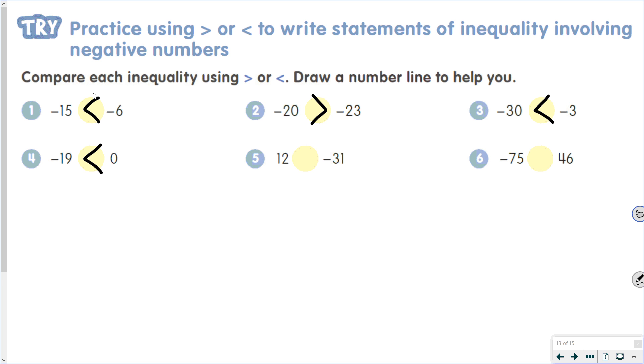For number 5, 12 is positive, negative 31 is negative, and positive is always greater than negative. Same thing on number 6: negative 75 is less than 46.